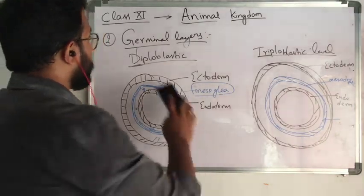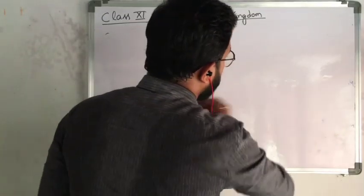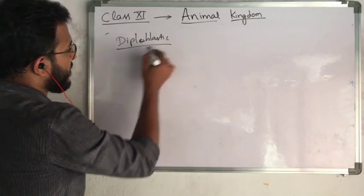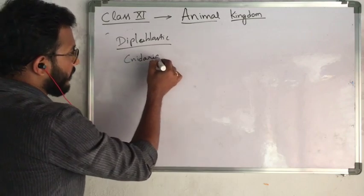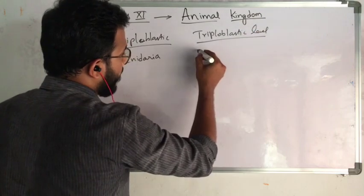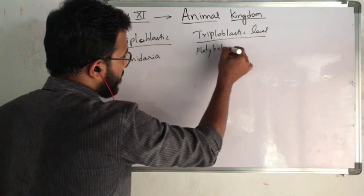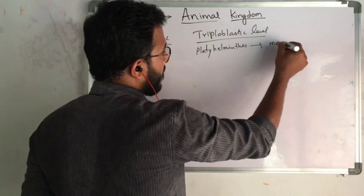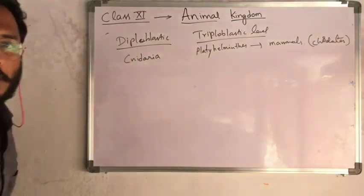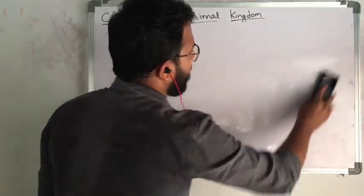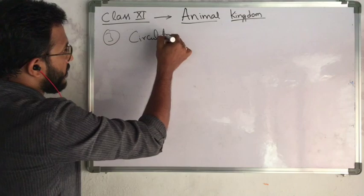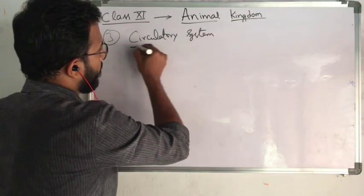The diploblastic level is exhibited by Cnidaria, and the triploblastic level is exhibited by Platyhelminthes to higher animals like mammals that belong to chordates.